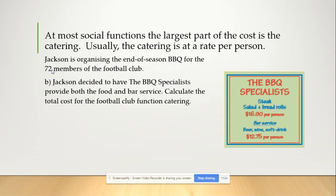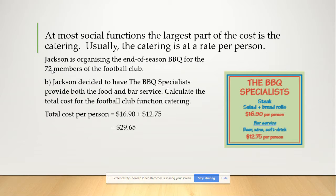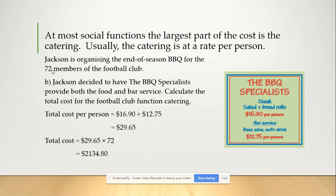You've got your $16.90 plus your $12.75 for the drinks, which gives you $29.65 each. Then you've got 72 people, so you multiply that by 72 and you get $2,134.80. So that's how much it would be to feed and provide drinks for them all.